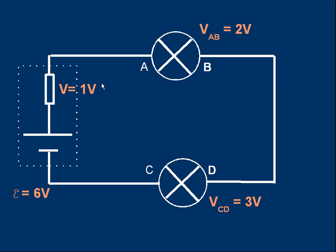In shorthand: EMF is six volts, and the three voltages are one, two, and three volts. The important thing to note is that the EMF is six and the voltages around the loop add up to six — one plus two plus three equals six. This comes from the law of conservation of energy: the six volts EMF represents energy turned from chemical to electrical, and the one plus two plus three represents electrical energy turned to heat or heat and light. The two must be equal, so the EMF equals the sum of the voltages for components in the loop.